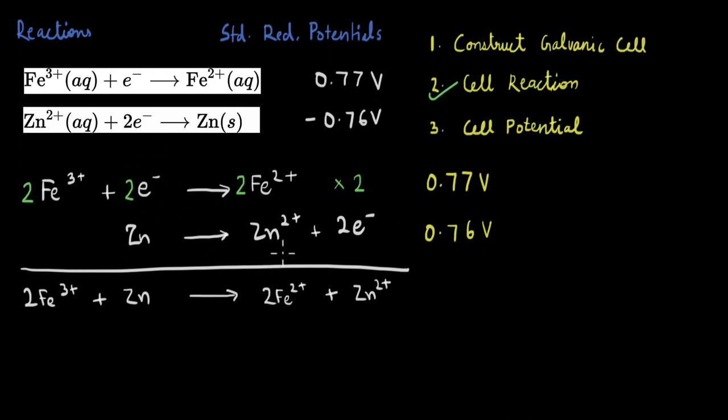And now, to get the cell potential, all that we do is add both of these. So we get the value to be 1.53 Volts.